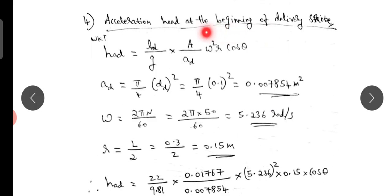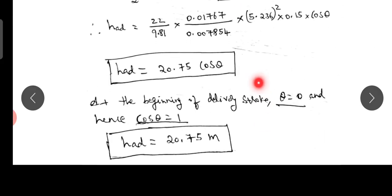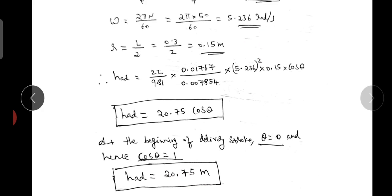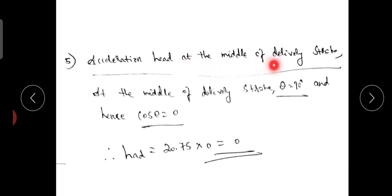At the beginning of the delivery stroke, θ = 0°, so cos θ = 1. At the middle of the delivery stroke, θ = 90°, so cos θ = 0. Substituting all values into the acceleration head formula gives the respective acceleration head values.